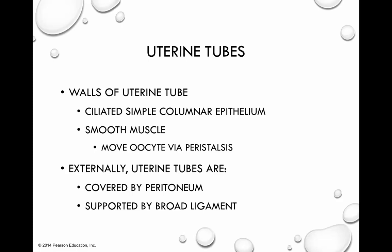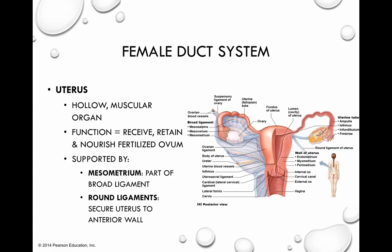On the exterior, what provides structural integrity to the uterine tubes is first a covering of peritoneum or dense connective tissue — think of that as the external layer, the tunica externa. It is also supported by portions of the broad ligament. All of this creates structural integrity. This also gives a nice view of the frontal shape of the infundibulum and the fimbriae — those finger-like projections.